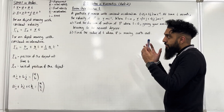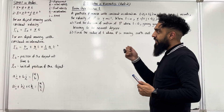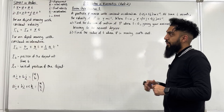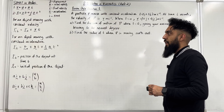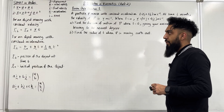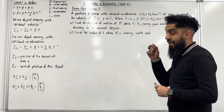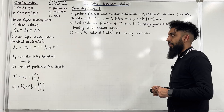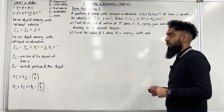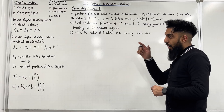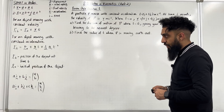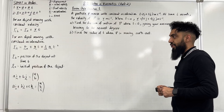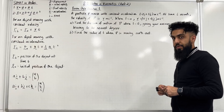For an object moving with constant velocity, R(T) is given by R₀ plus VT. For an object moving with constant acceleration, R(T) is given by R₀ plus UT plus a half AT squared. R(T) is the position of the object at time T, and R₀ is the initial position of the object.